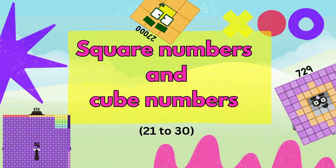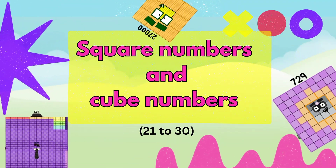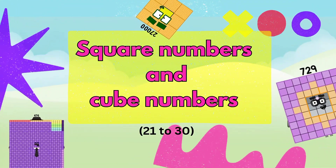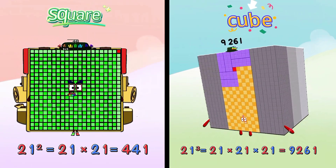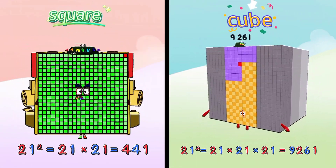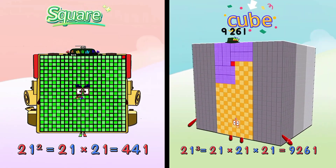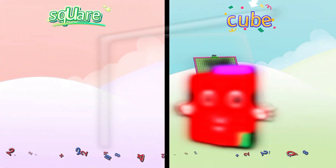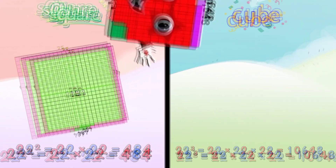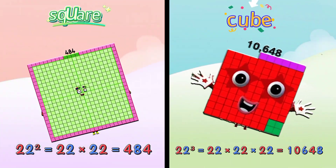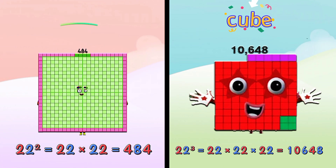Hello little learners, let's learn square numbers and cube numbers. 21 square is 441, and 21 cube is 9261. Square of 22 is 484, and cube of 22 is 10648.